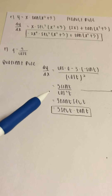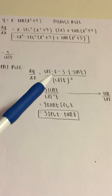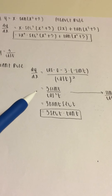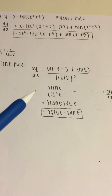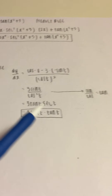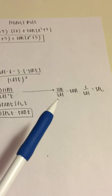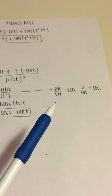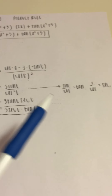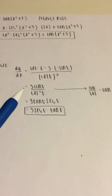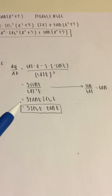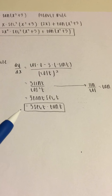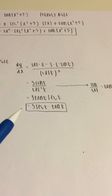This simplifies to 3 sine t over cosine squared t. Using trig identities, sine over cosine is tangent and 1 over cosine is secant, so this simplifies to 3 tan t times secant t. The final answer is 3 secant t times tan t.